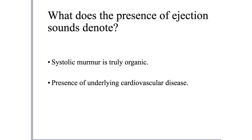Ejection sounds are a systolic phenomenon because ejection of blood always occurs in systole. When associated with a murmur, it denotes that the murmur is truly organic - not a flow murmur or functional murmur across a normal valve, but a murmur because of a diseased valve. For example, if there is pulmonary stenosis and you hear a pulmonary ejection click, that ejection systolic murmur is because of the diseased valve. In essence, ejection sounds indicate underlying cardiovascular disease.